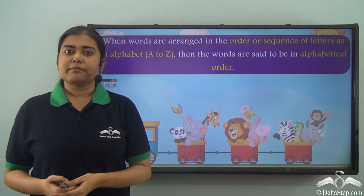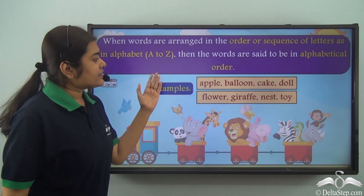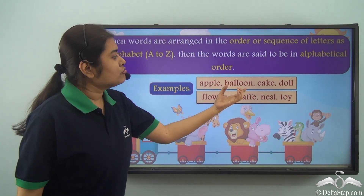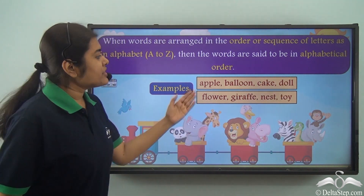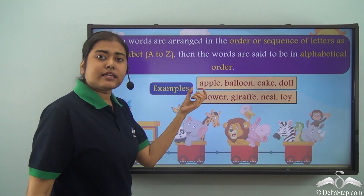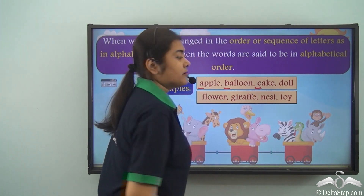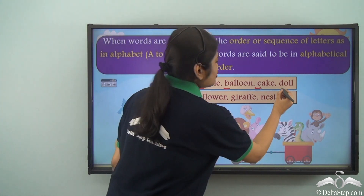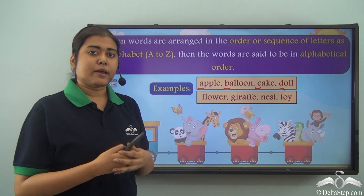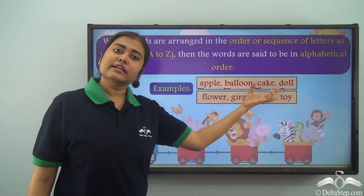Now let us take up more examples to understand what we mean. Look at these two sets of examples. First we have apple, balloon, cake, doll. In these four words, apple begins with A, balloon begins with B, cake begins with C, and doll begins with D. Just as in the alphabet we have A, B, C, D, similarly here the words follow the same order.